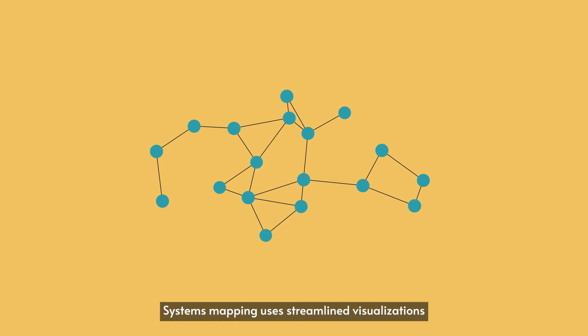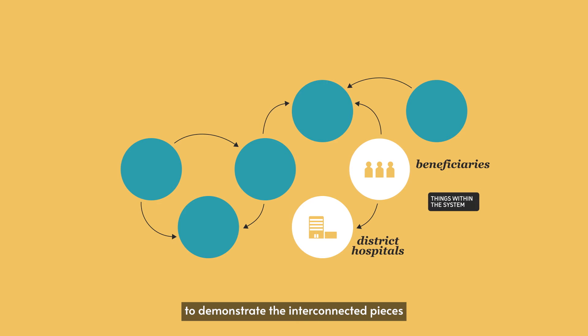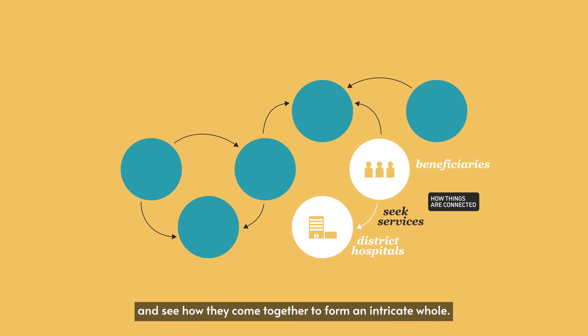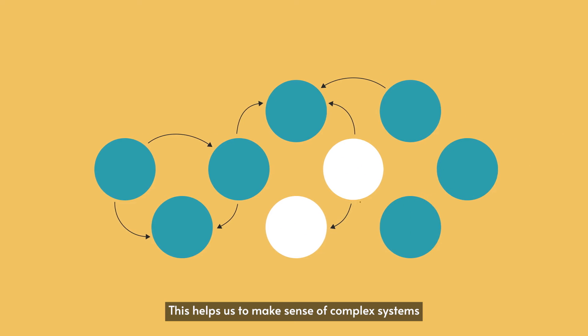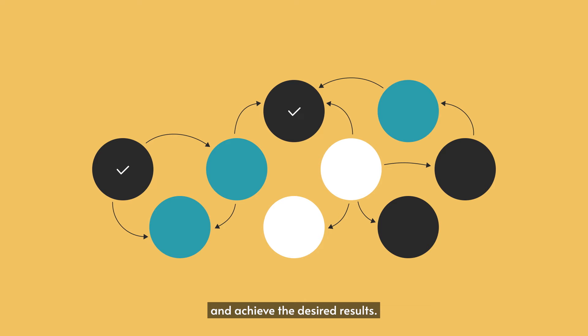Systems mapping uses streamlined visualizations to demonstrate the interconnected pieces and see how they come together to form an intricate whole. This helps us to make sense of complex systems so that we can identify the best ways to intervene and achieve the desired results.